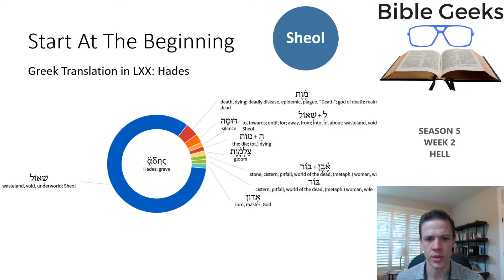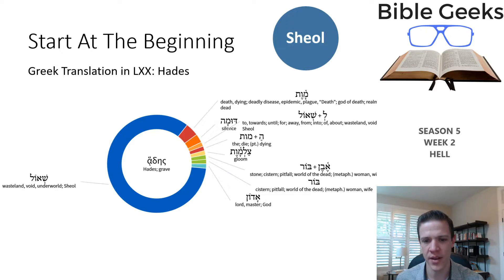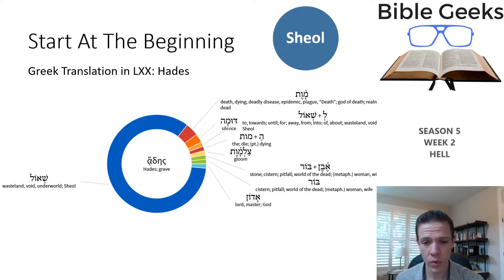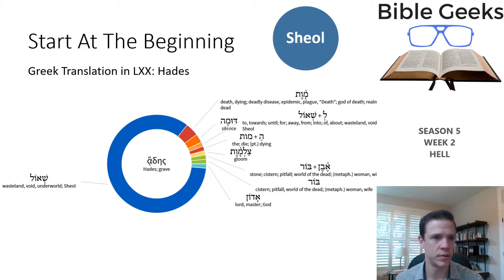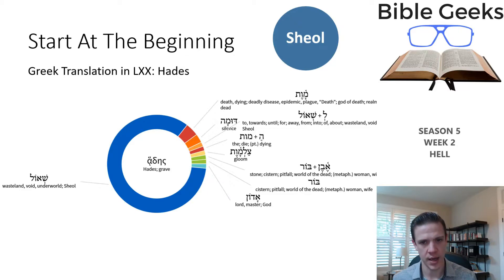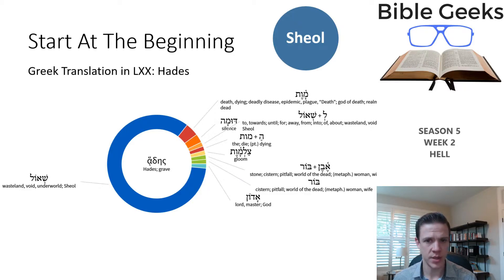Hades is used to translate some other Hebrew words as well — words I can't pronounce — but the associations include death, dying, wasteland, void, stone, cistern, pitfall, world of the dead. That would be 'the pit,' which we'll see later. Also lord, master, God. So you've got this idea that it's associated with death, which is consistent with what we saw before. In Hebrew: Sheol. In Greek: Hades.